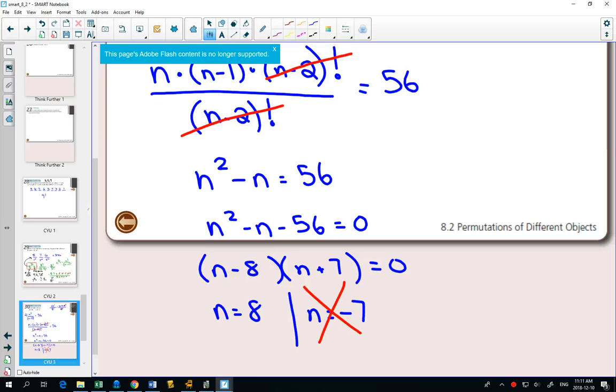Then negative 7 cancels out. Leaving us only with n equals 8, which you already told me was the right answer. So when you get question A on an exam, it will say solve for n algebraically. They want to see your work with factorials being able to simplify it.